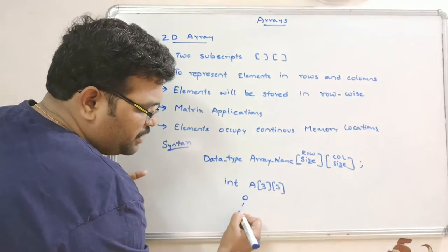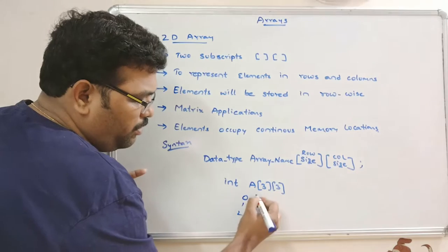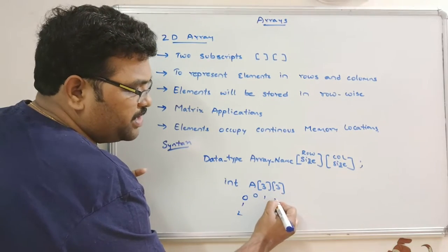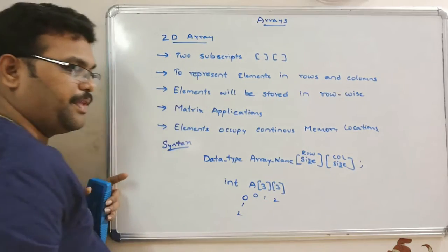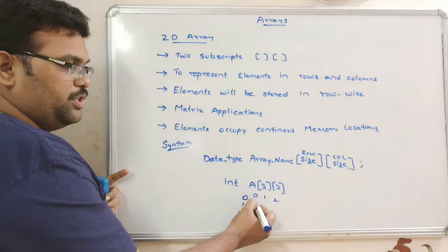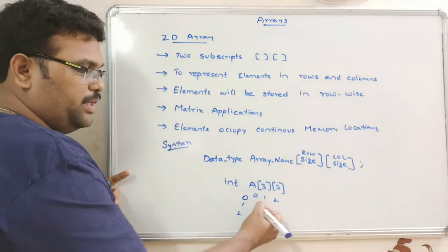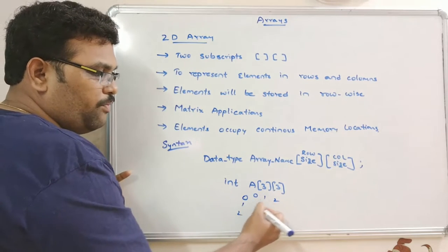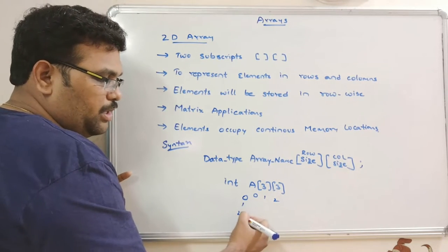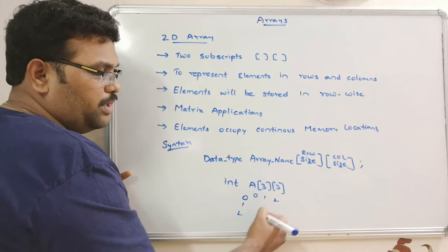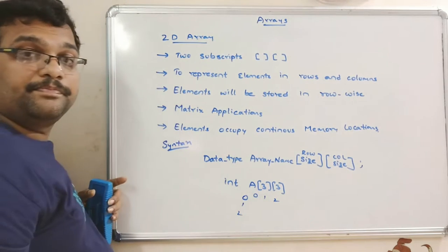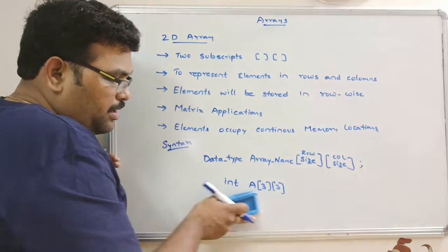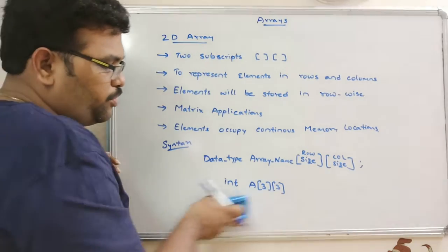For a three-by-three matrix the index positions are: [0][0], [0][1], [0][2] for the zeroth row; [1][0], [1][1], [1][2] for the first row; and [2][0], [2][1], [2][2] for the second row. In this way the nine elements will be stored.